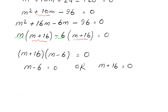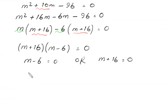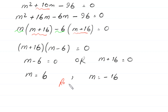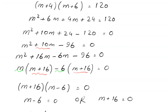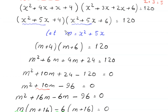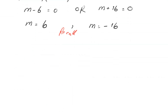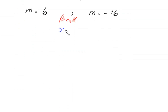From these equations, m = 6 or m = -16. But we need to find the values of x. Recall that we substituted m = x²+5x, so we now substitute back: x²+5x = m.